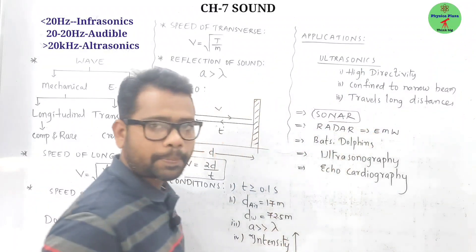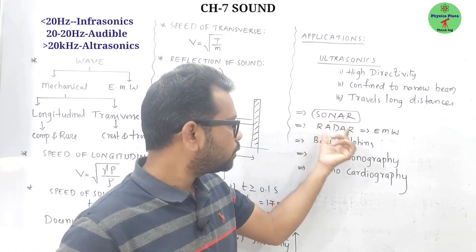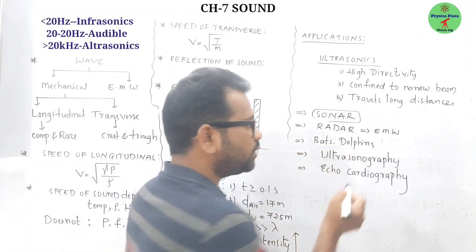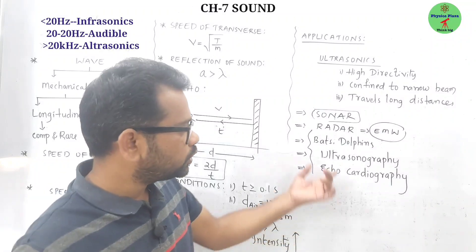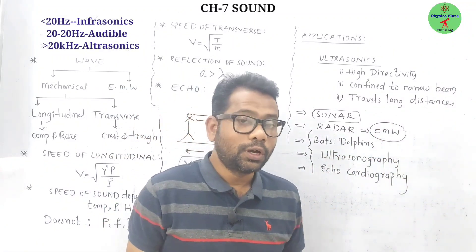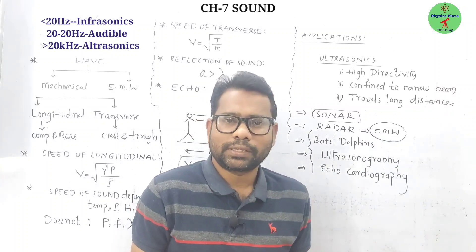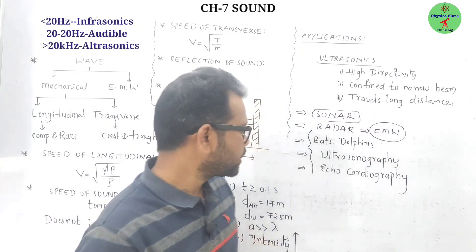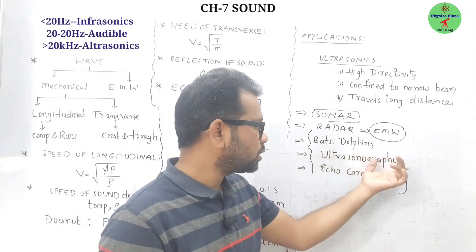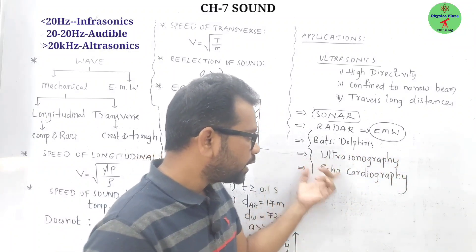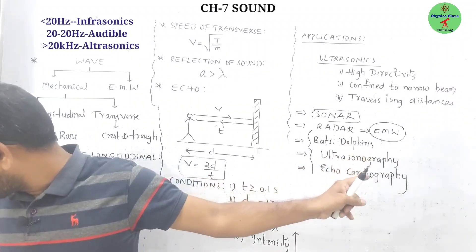Radar stands for Radio Detection And Ranging. In radar, electromagnetic waves are used. Bats and dolphins can produce ultrasound and use the echo concept to find their destinations, prey, and obstacles. Ultrasonics are also used in ultrasonography and echocardiography.